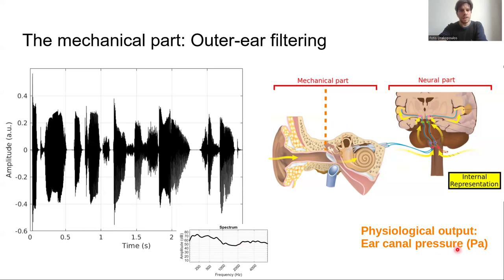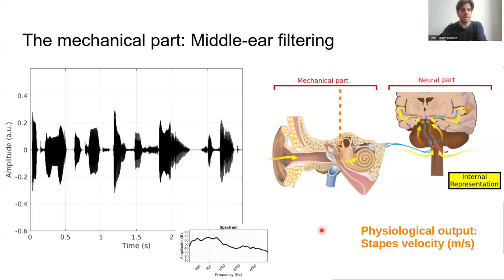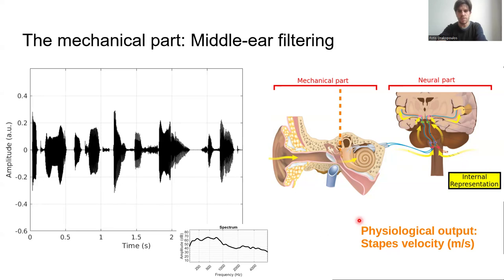After we go through the ear canal, we have the middle ear. The middle ear is in charge of acting as an impedance adapter between a medium where air is moving to the inner ear, where fluids are being moved inside the structure. It's composed by three bones, and one of the physiological outputs at this point is the stapes velocity. Comparing with the previous slide, we can see that this can be approximated as a bandpass filter with a center frequency at about 800 Hz.